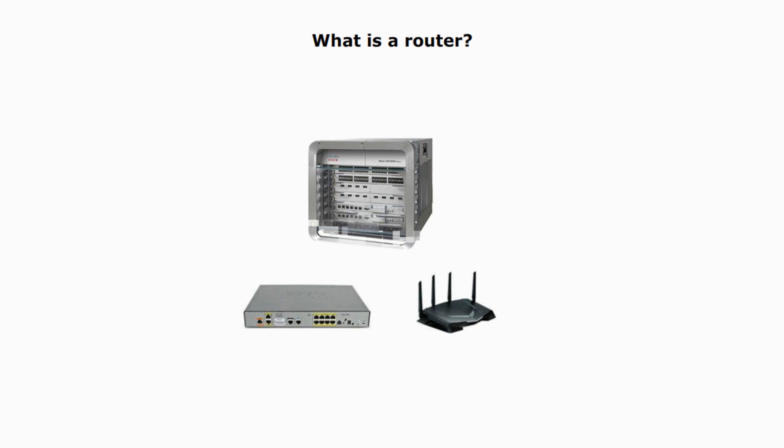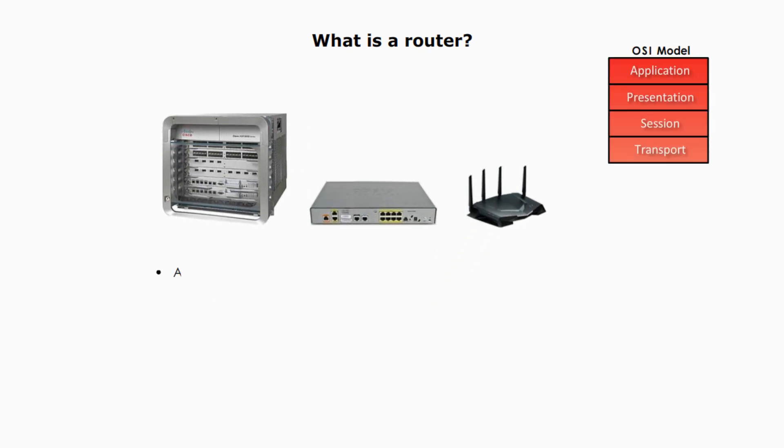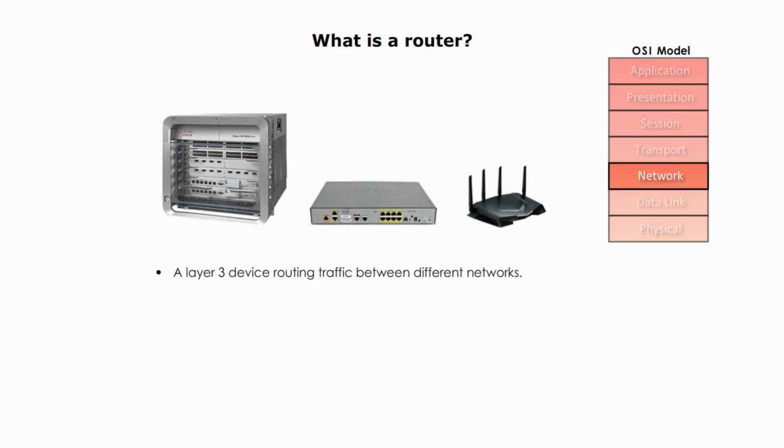What's a router? A router is a device that operates at layer 3, or the network layer, of the OSI model. A router delivers traffic between different networks. Routers are bridges across networks. No router, no internet.